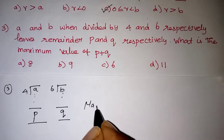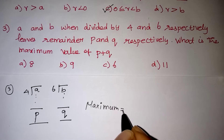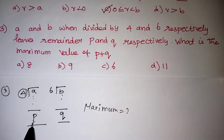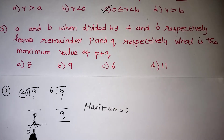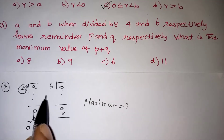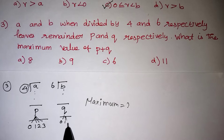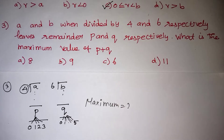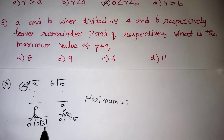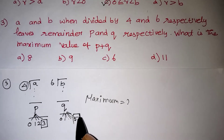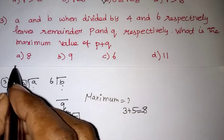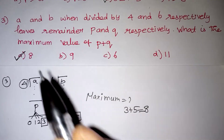They are asking for the maximum value of p and q. Since we are dividing by 4, the possible remainders are 0, 1, 2, or 3 only — so the maximum remainder p is 3. When dividing by 6, the remainder can be 0, 1, 2, 3, 4, or 5 — so the maximum remainder q is 5. Therefore maximum p plus q equals 3 plus 5, which gives 8. So 8 is your correct answer.